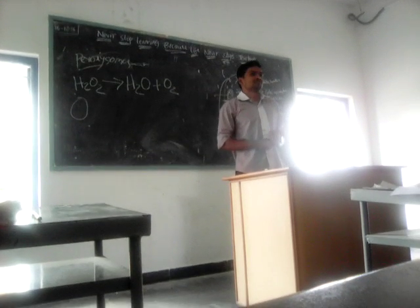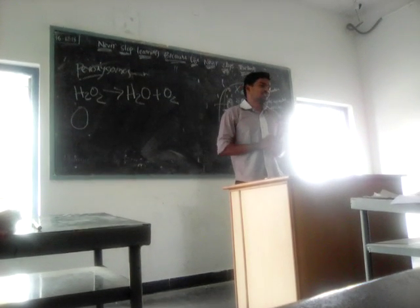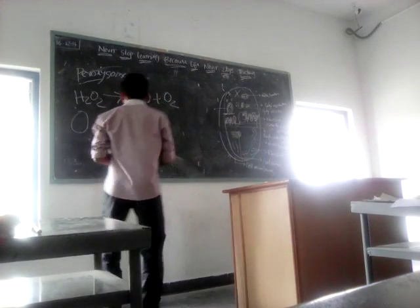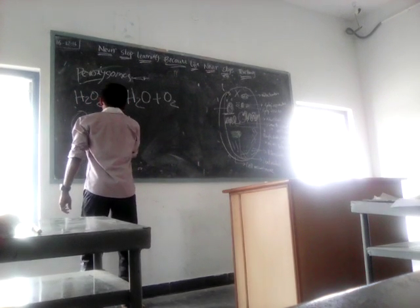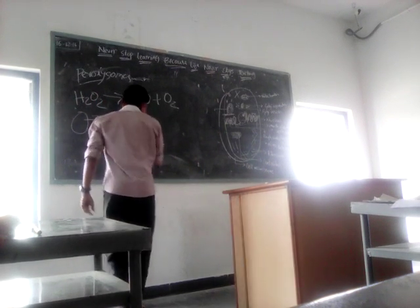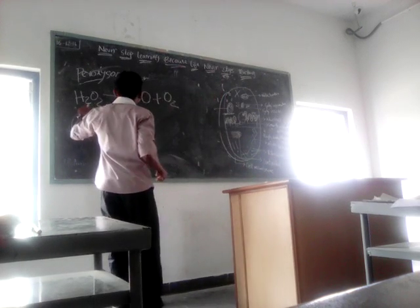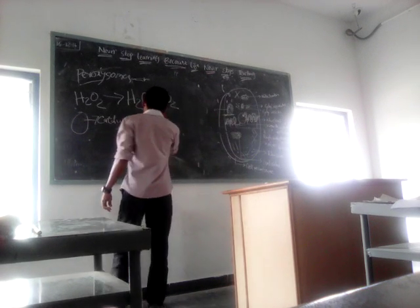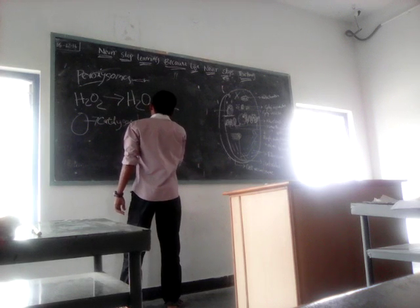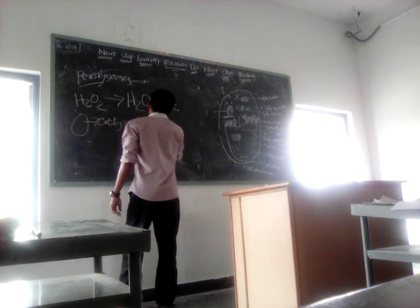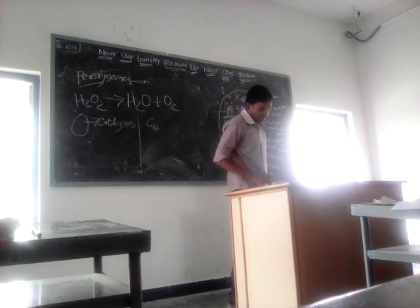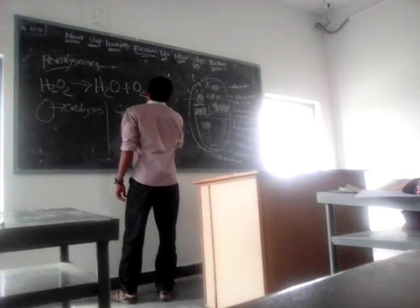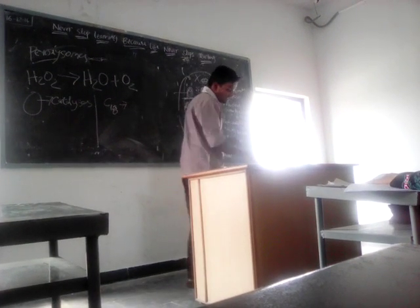Peroxisomes are also called microbodies. They contain enzymes — catalase. These catalases help in oxidation of peroxide into water and alcohol. They also help in oxidation of long-chain fatty acids with carbon atoms greater than 60, and also help in the formation of plasmalogen and glycogen.